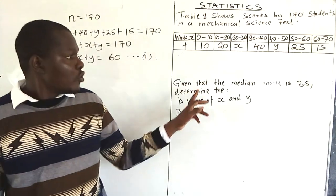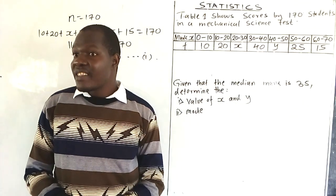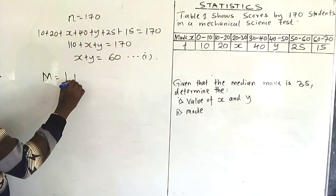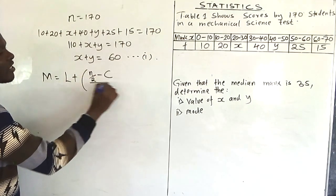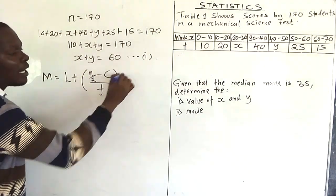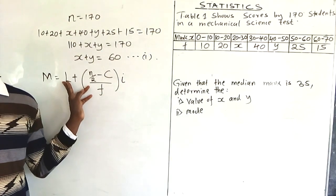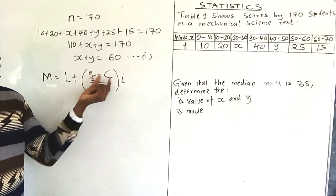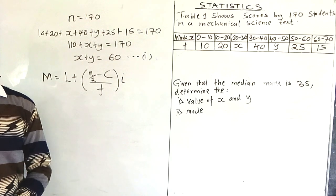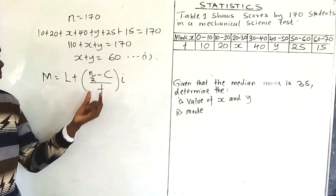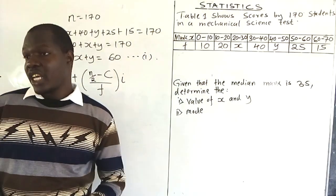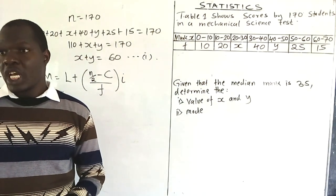For Equation 2, you've been given that the median mark is 35. The median is found by: lower class limit + (n/2 − c)/f × i, where L is the lower class limit of the median class, n/2 represents the median value, c is the cumulative frequency of the class above the median class, f is the frequency of the median class, and i is the class interval.